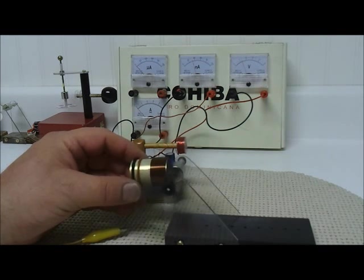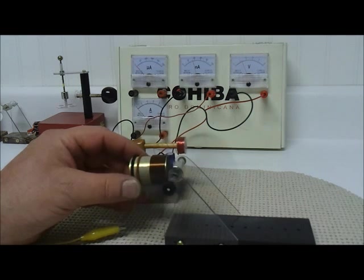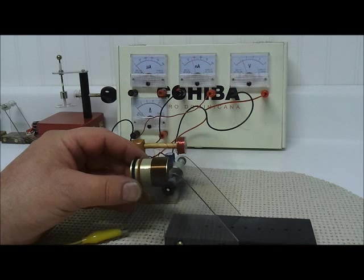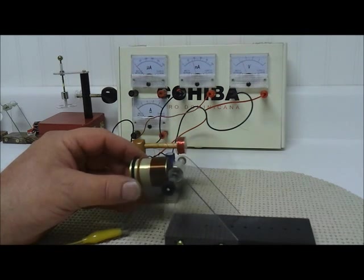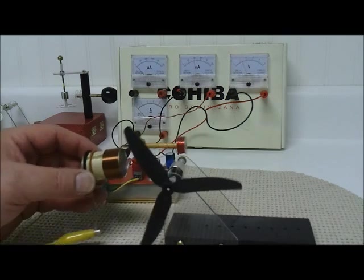Now the circuit, the pot is still at the same setting that it was running using that other coil. Now this coil does draw a little more current but it seems to drive that motor much quicker. There we go.